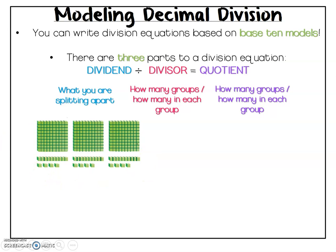I can write two different division equations from this model. The first one that jumps out to me right away is that I see that these pieces are split into three separate groups. That means my divisor for one of my equations could be three. Now if my divisor tells me how many groups I have, the quotient tells me how many items are in each group.